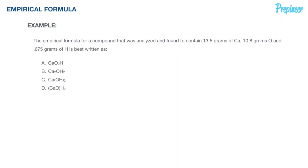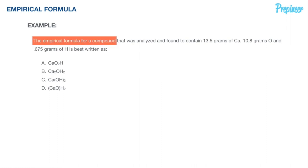This problem asks us to state the empirical formula for a compound that was analyzed and found to contain 13.5 grams of calcium, 10.8 grams of oxygen, and 0.675 grams of hydrogen. We are asked to determine the empirical formula for this compound, and we are given the analysis data to work from.